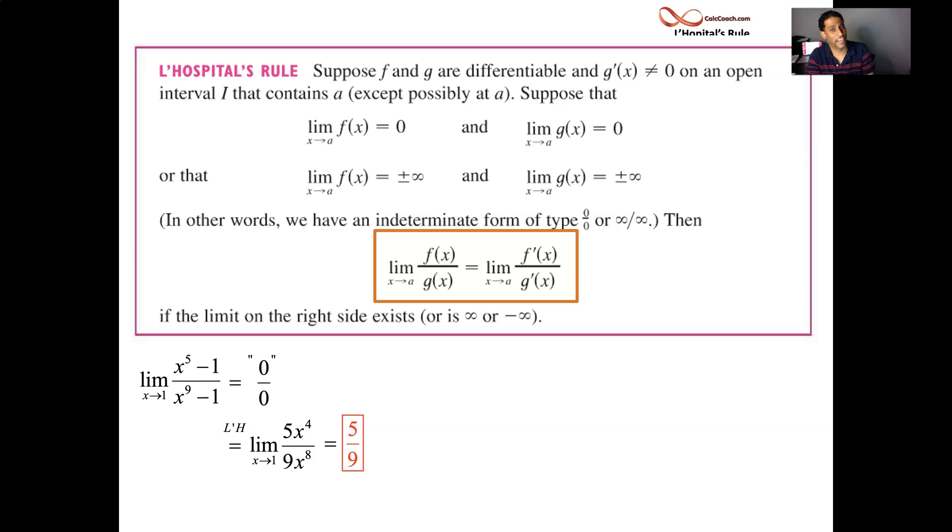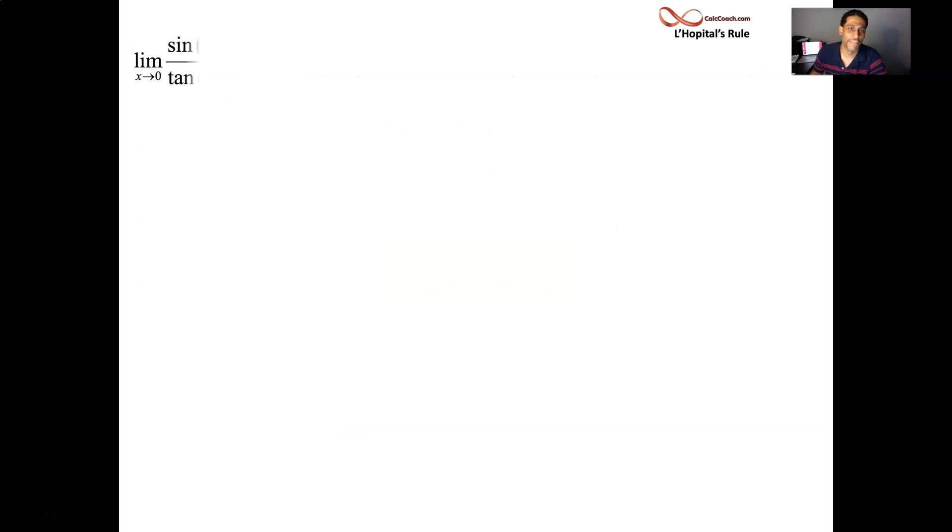Now, the difficulty level there was very low. So let's ramp it up a little bit. Example number two. We have trig. X is headed to 0. Sine of 4x divided by tangent of 5x. Try to plug a 0 in.